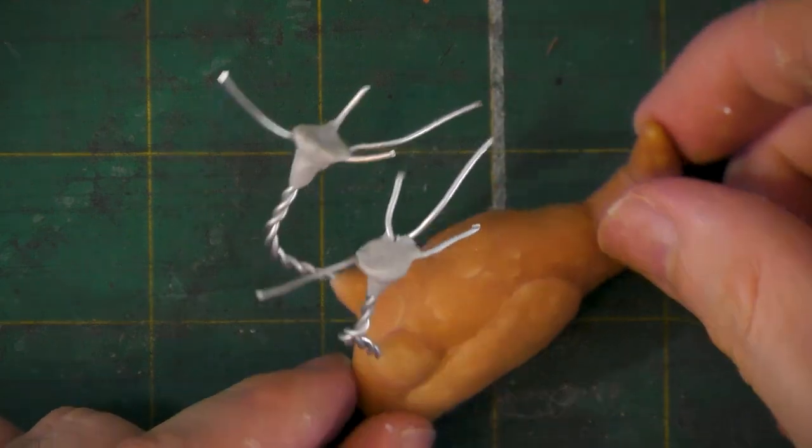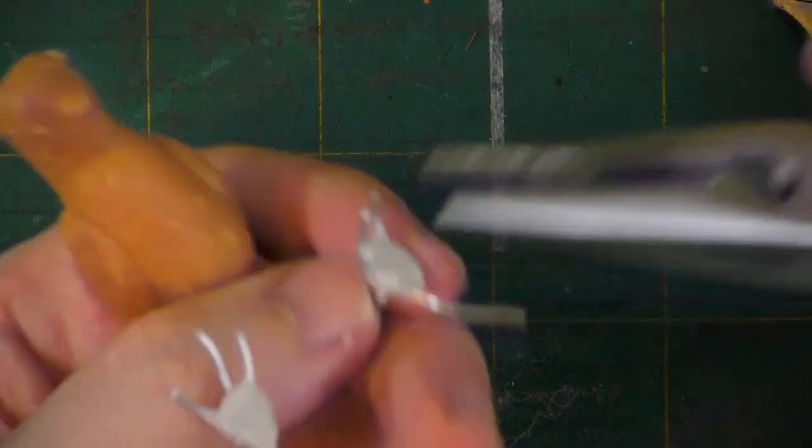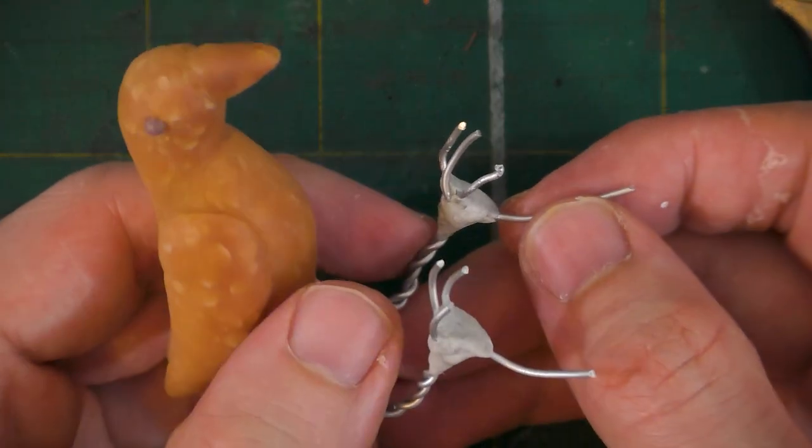Here's what the sculpted feet look like. We'll trim off the extra wire on the middle talon. I'm actually going to leave a lot of the extra wire on the rear talon because it's going to be useful to attach this to a fence post that I want to put him on for a photoshoot.